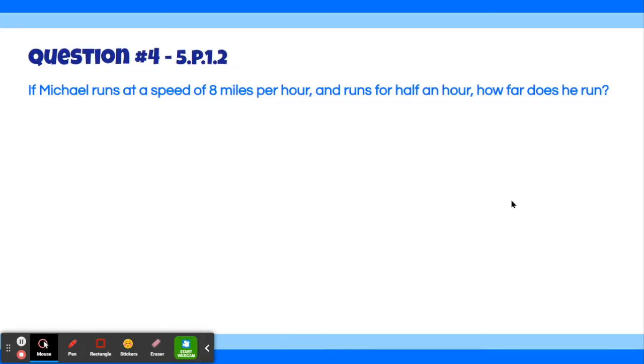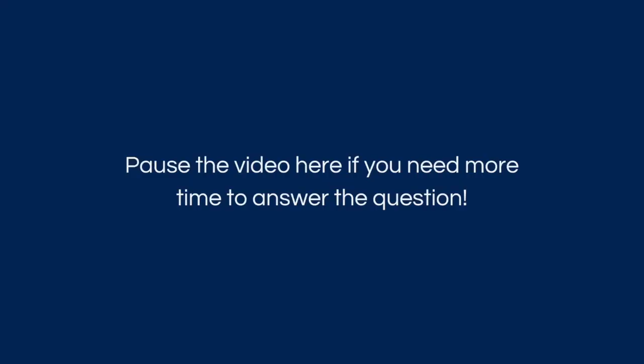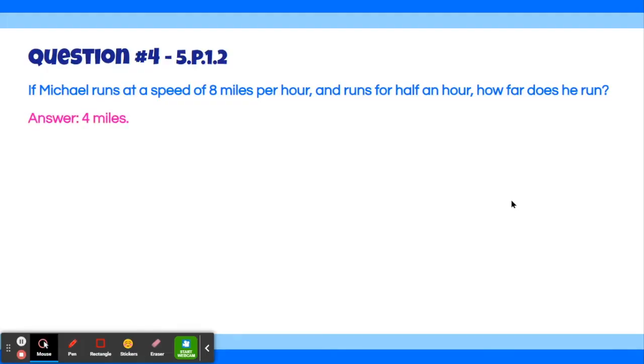Alright, let's move on to question number 4. If Michael runs at a speed of 8 miles per hour and runs for half an hour, how far does he run? Well, the answer is 4 miles.